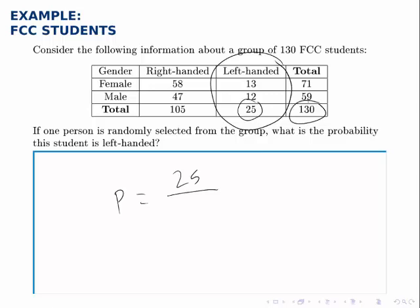There are 130 total students overall, so the probability of selecting a left-handed student is 25 divided by 130. Written as a decimal, that comes out to about 0.192.